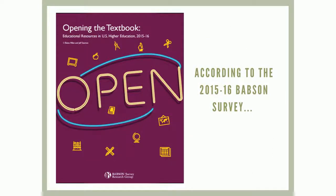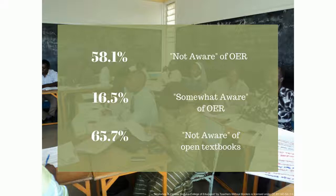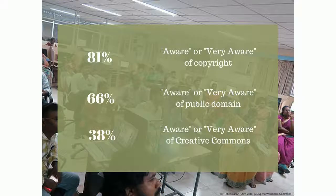According to a 2015–2016 Babson survey, 58.1% of faculty reported being not aware of open educational resources, and 16.5% were somewhat aware. This represents a modest increase from the 2014–2015 survey. 16.5% responded that they were not aware of open textbooks. There is a concern that faculty have a fuzzy understanding and awareness of both OER and the concept of open. 81% are aware or very aware of copyright, 66% said that they are aware or very aware of the public domain, and 38% are aware or very aware of Creative Commons.